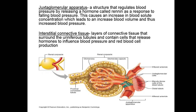Back to the juxtaglomerular apparatus — we talked about it a little bit; it secretes renin. Renin is responsible for converting angiotensinogen to angiotensin I, which then goes to the lungs where ACE enzymes convert angiotensin I to angiotensin II. That acts to increase blood pressure. It can also regulate the adrenal glands to secrete aldosterone, which also helps increase blood pressure. This happens in the area where blood is coming in, and the blood is regulated both coming in and going out.